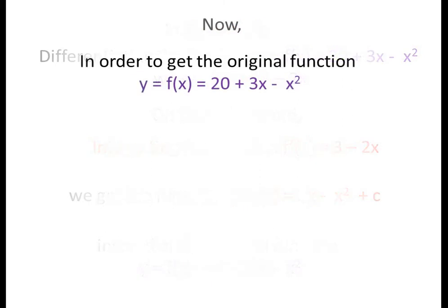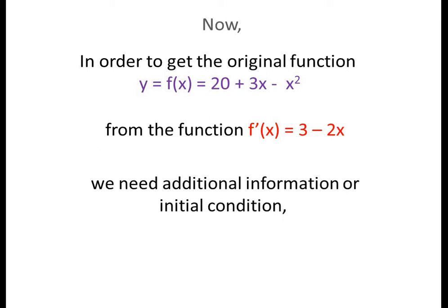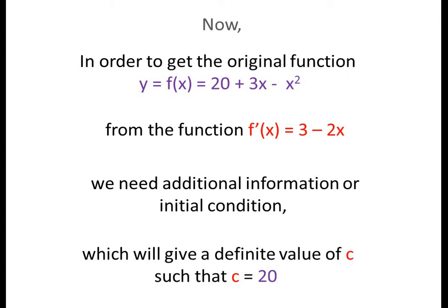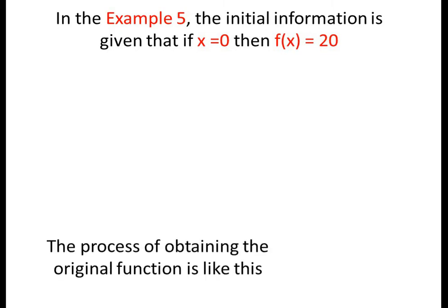Now, in order to get the original function y = 20 + 2x - x² from the derived function f'(x) = 3 - 2x, we need additional information or an initial condition which will give a definite value of c such that c becomes 20. In Example 5, the initial information given is that when x = 0, f(x) = 20.